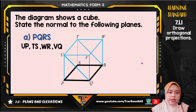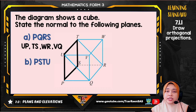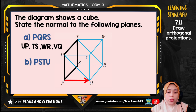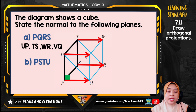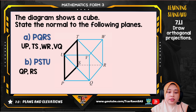The second plane is PSTU, which is a vertical plane. The red arrows highlight the lines making 90 degrees from this plane. The normals to plane PSTU are QP, RS, WT, and NV.